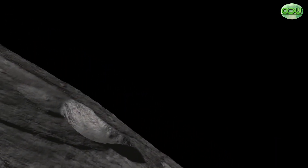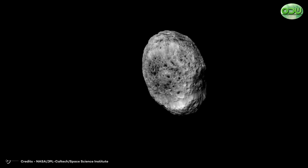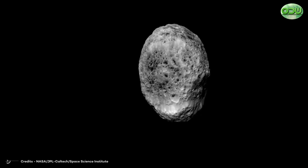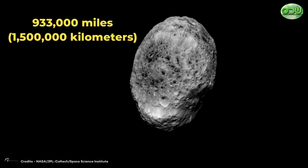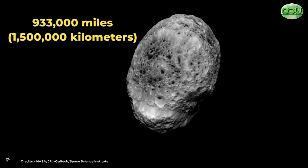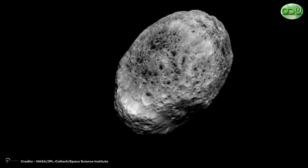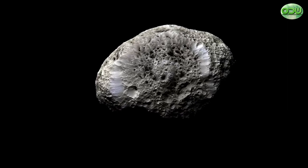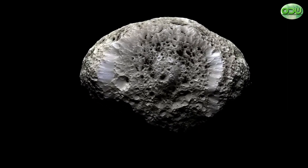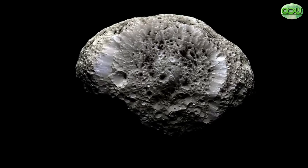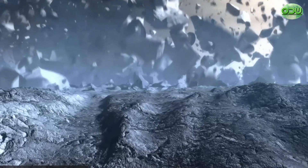Hyperion rotates chaotically, tumbling unpredictably through space as it orbits Saturn. Hyperion orbits at a mean distance of 933,000 miles, or 1,500,000 kilometers, from Saturn in an eccentric orbit. This contributes to variations in the spin or rotation of Hyperion.